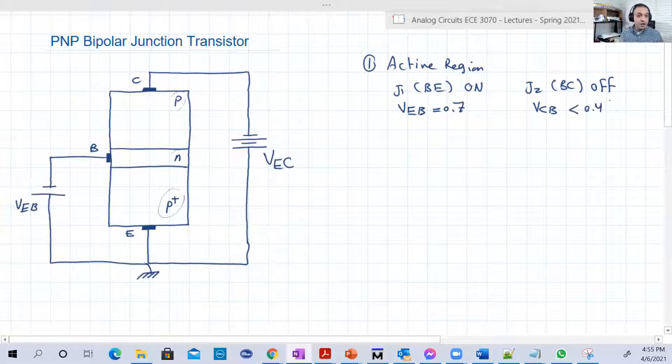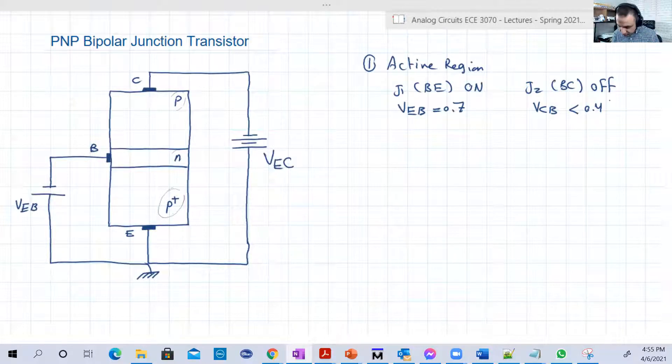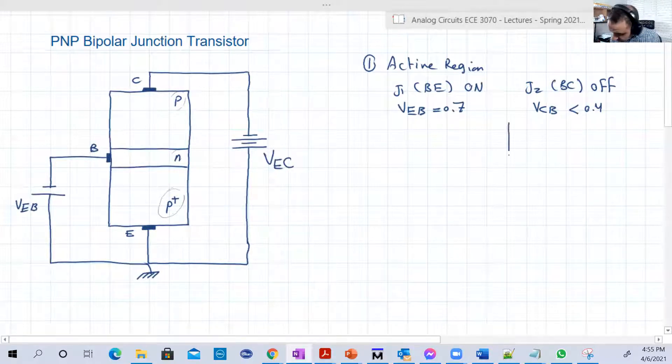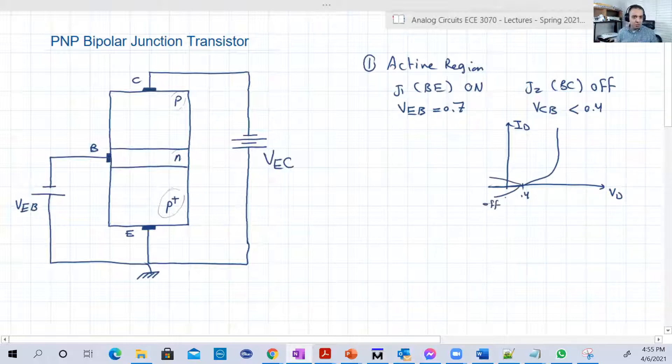It might be forward but with a very small voltage so that it still can be considered off. Again, to remind you, any junction, the voltage and the current of any junction is related with such exponential relation. So between 0.4, it can be considered off, or the current approximately zero.